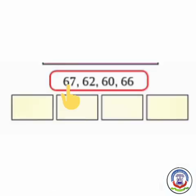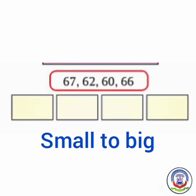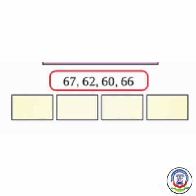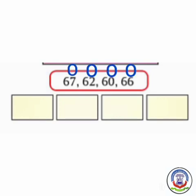Next is 67, 62, 60, 66. We have to arrange them in ascending order — that is, from small to big. First we will find the smallest number. We will first see the 10s place. Here, at the 10s place all numbers are the same. So we will see the 1s place. The numbers are 7, 2, 0 and 6. Which number is smallest? Here, 0 is smallest. So we will write 60 first in the box.